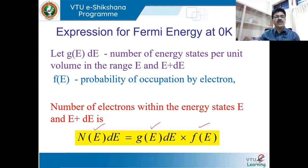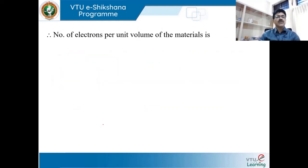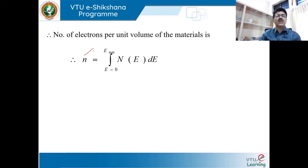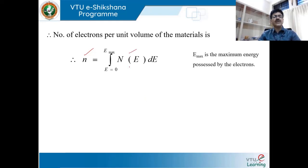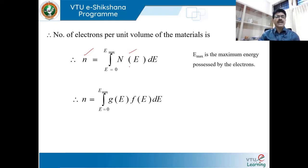My aim is to find the total number of electrons present per unit volume of the material. To find this, I integrate N(E)dE from E = 0 to E = maximum, giving the total number of electrons per unit volume. Since N(E)dE = G(E)dE × F(E), I can write N = ∫G(E)·F(E)·dE from E = 0 to E_max, where E_max is the maximum energy possessed by the electrons.